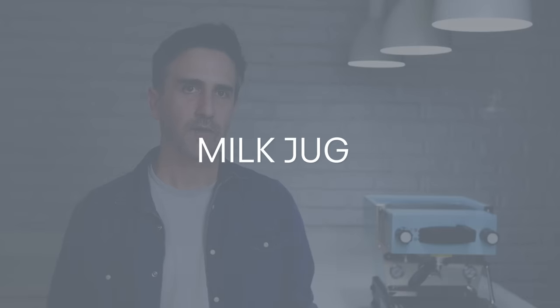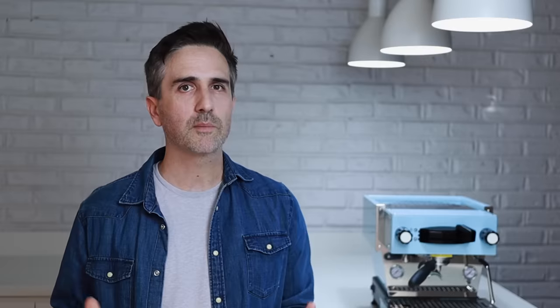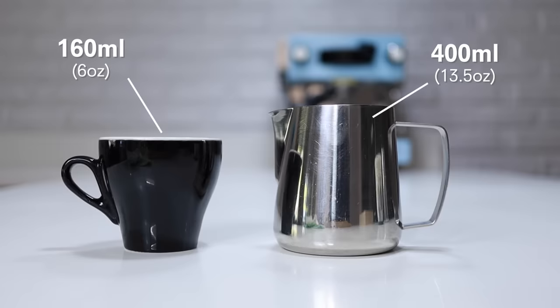Next is the milk jug. For best results, you'll want to pick a milk jug that's around two to three times the size of the cup or cups that you're pouring into. So for a classic 160ml flat white or cappuccino, you'll want to pick a 400ml jug.